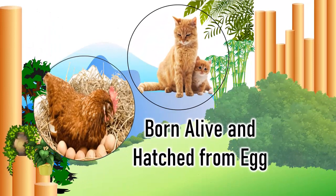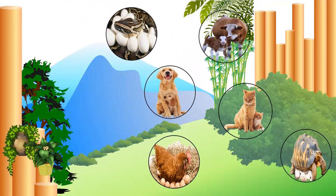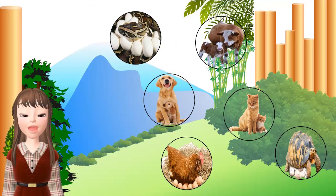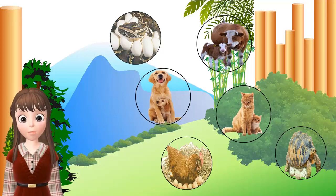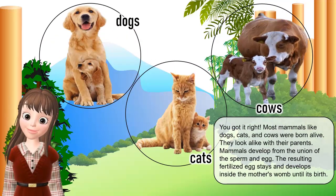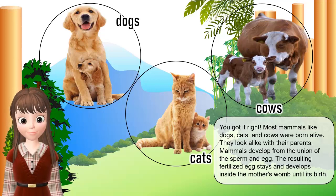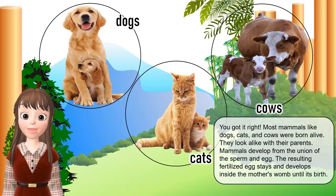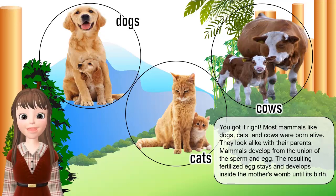Born alive and hatched from egg. Take a look at these animals. Which of these animals were born alive? Most mammals like dogs, cats, and cows were born alive. They look alike with their parents. Mammals develop from the union of the sperm and egg. The resulting fertilized egg stays and develops inside the mother's womb until its birth.